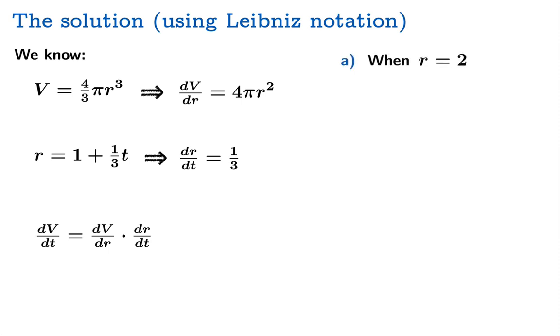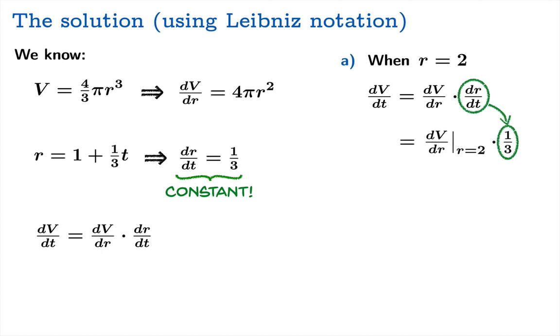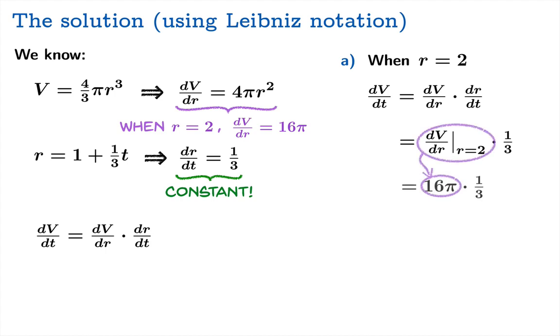So let's answer problem A. When r equals two, well, we know that dr dt is actually one-third. It's a constant, so we'll just substitute that information in. And now when r equals two, we'll notice that dv dr is going to equal 16 pi. So we'll substitute that in. And here we have our answer. dv dt is 16 pi over 3, which is approximately 16.755 cubic centimeters per second.